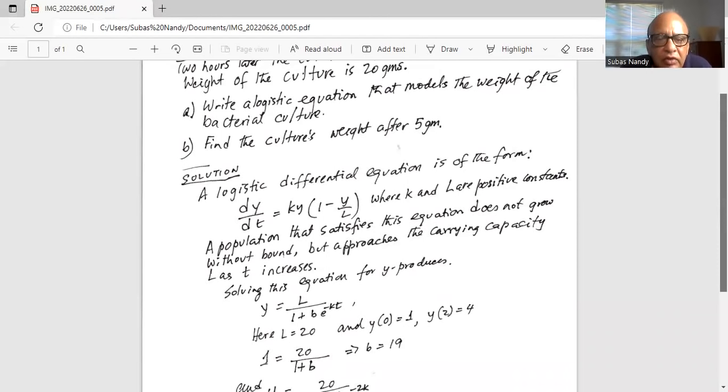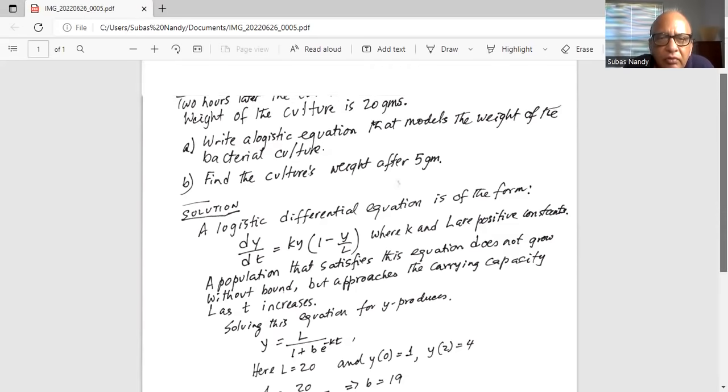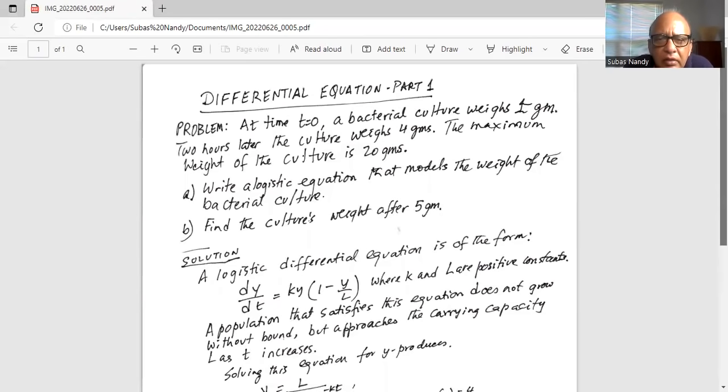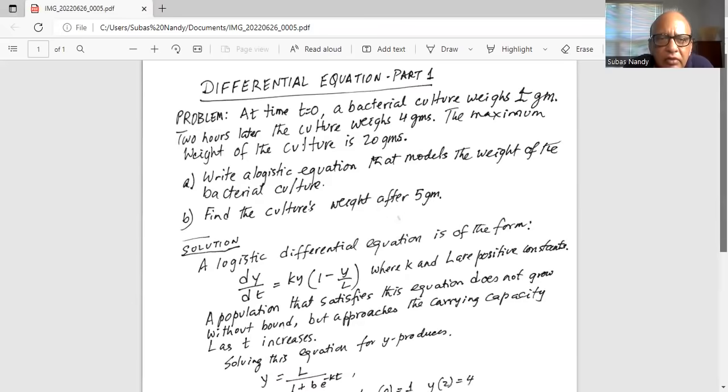Now, L equals 20, y at time t equals 0 is 1, and y at time t equals 2 is 4. These are all given in the problem.